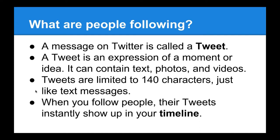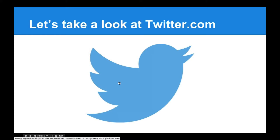On Twitter, people are following what's called a tweet — a message, an expression of a moment or an idea. It can contain text, photos, or videos. Tweets are generally limited to 140 characters, a lot like text messages on the phone. This brevity can be really useful once you get used to it. For a lot of folks when getting started, they feel like they have too much to say, but 140 characters really forces you to get to the core of what you need to say and get rid of all the extra stuff. When you follow a user, their tweets — their messages — show up on your timeline. So now we have a lot of words: follow, tweet, timeline. Let's dive into Twitter and see what that actually looks like.